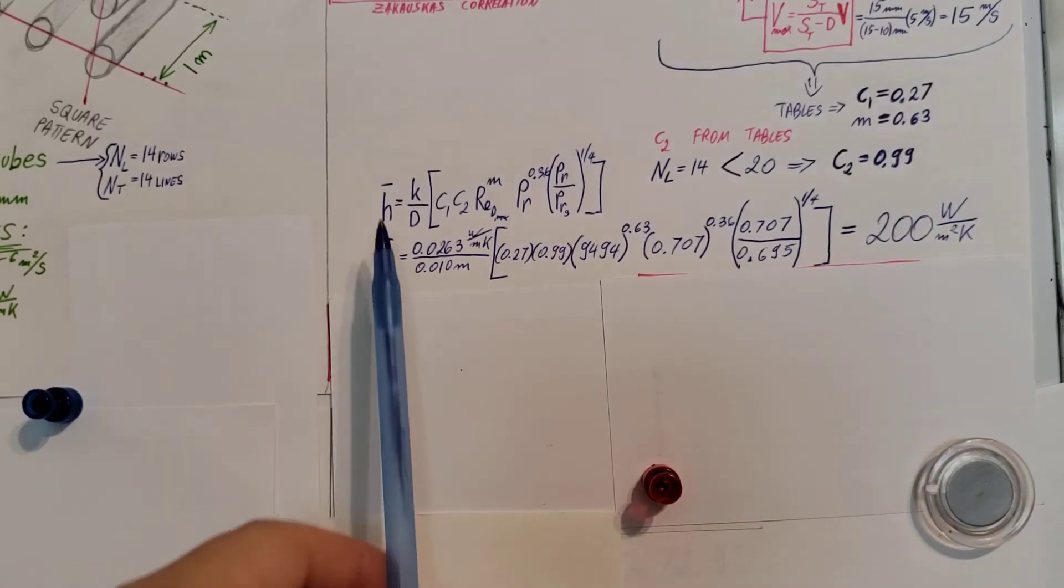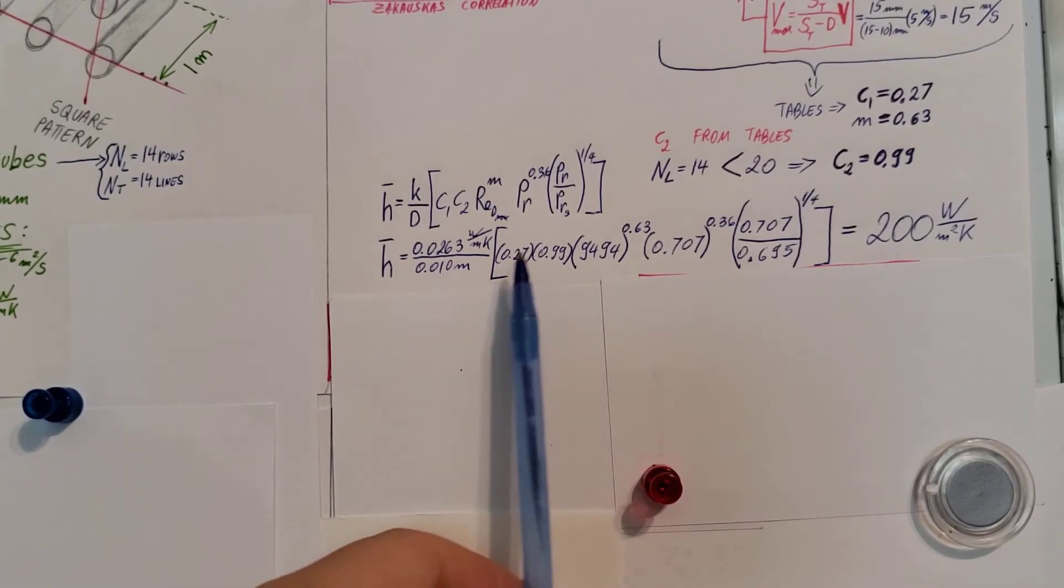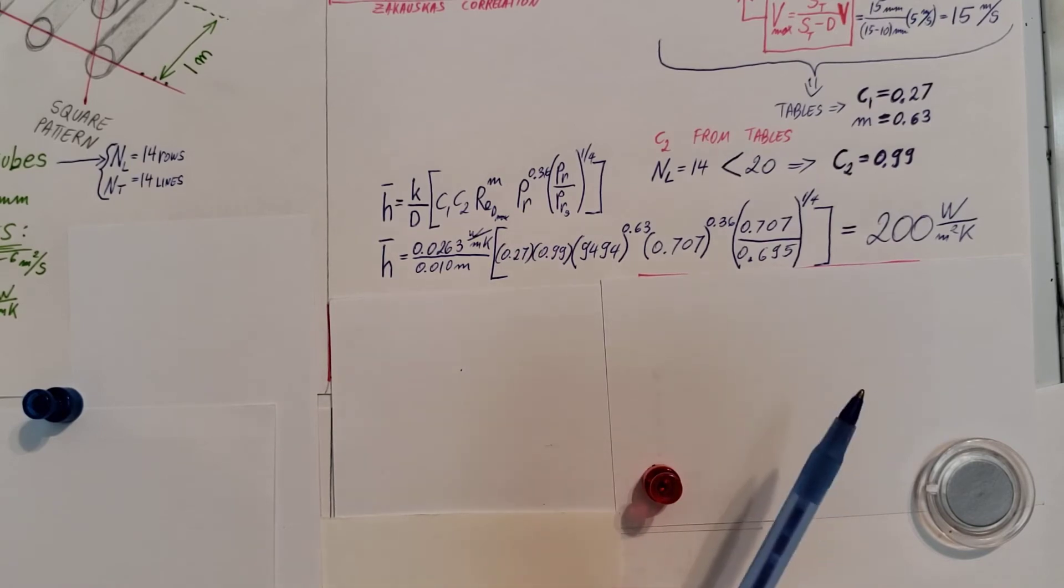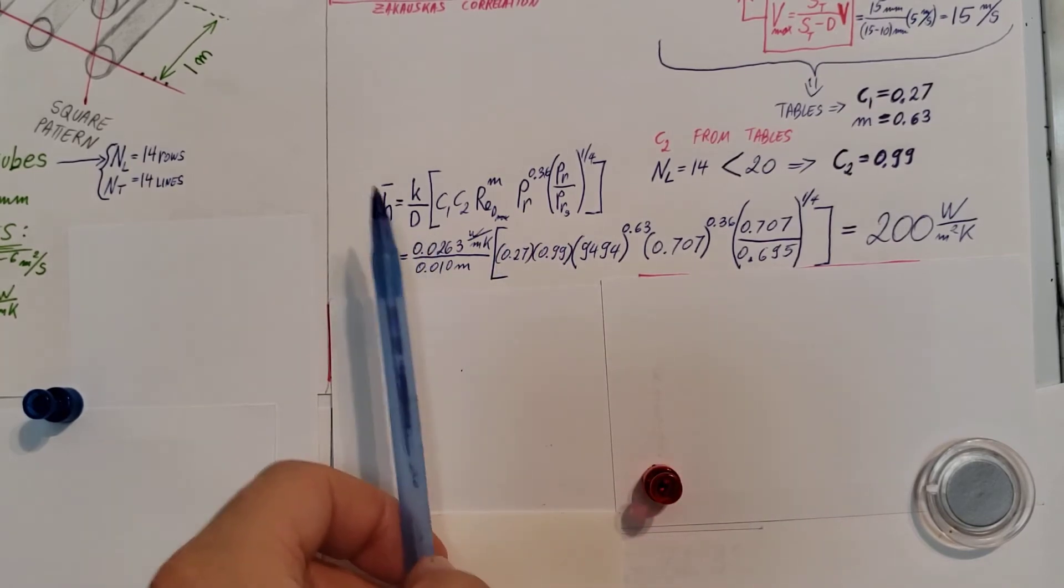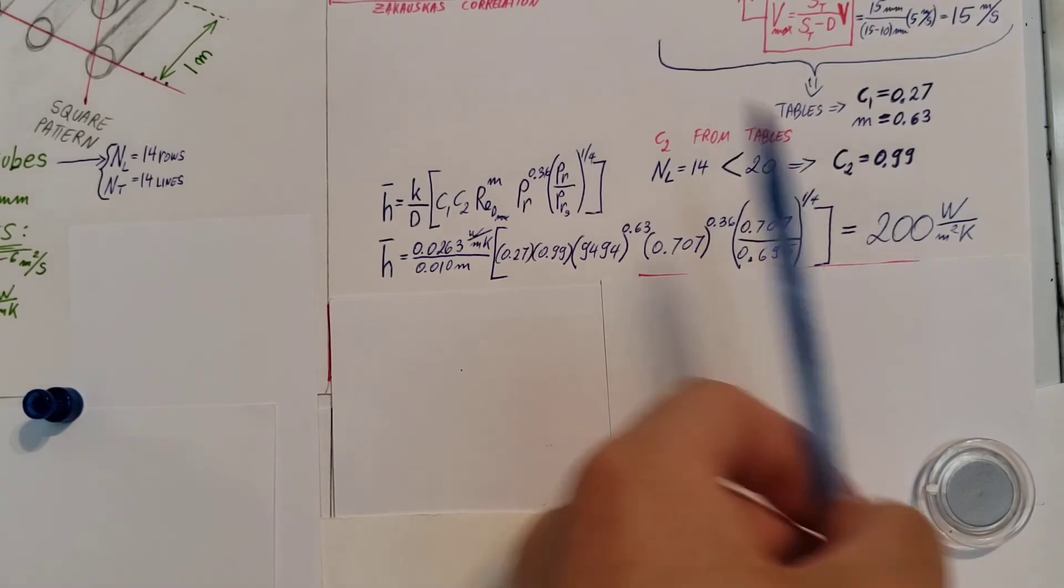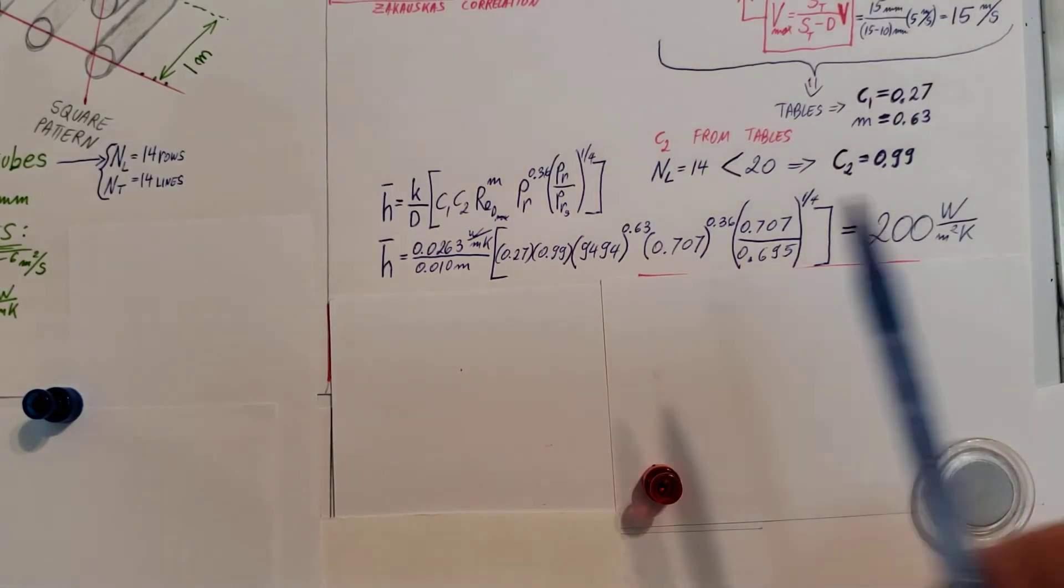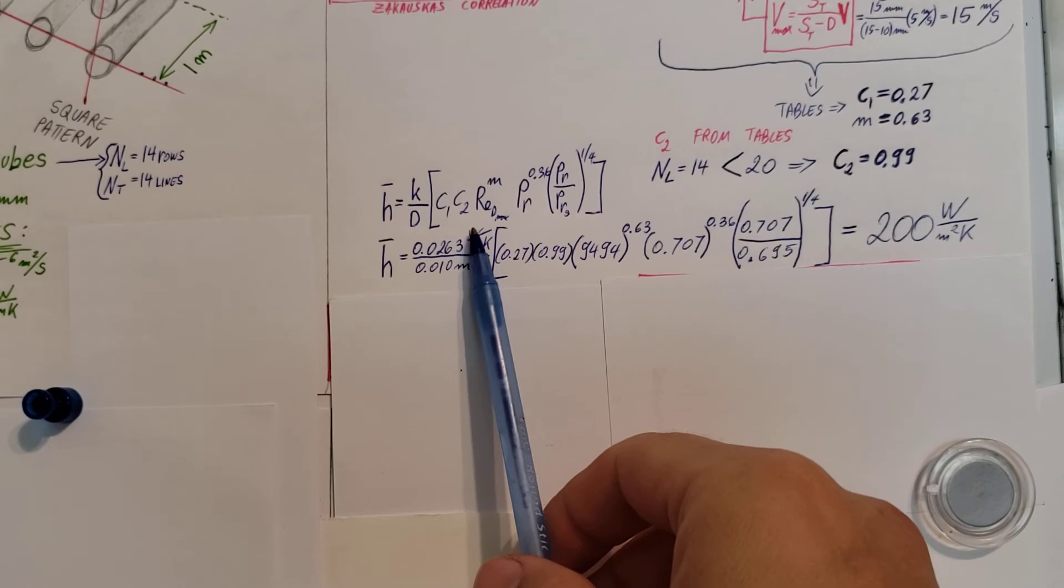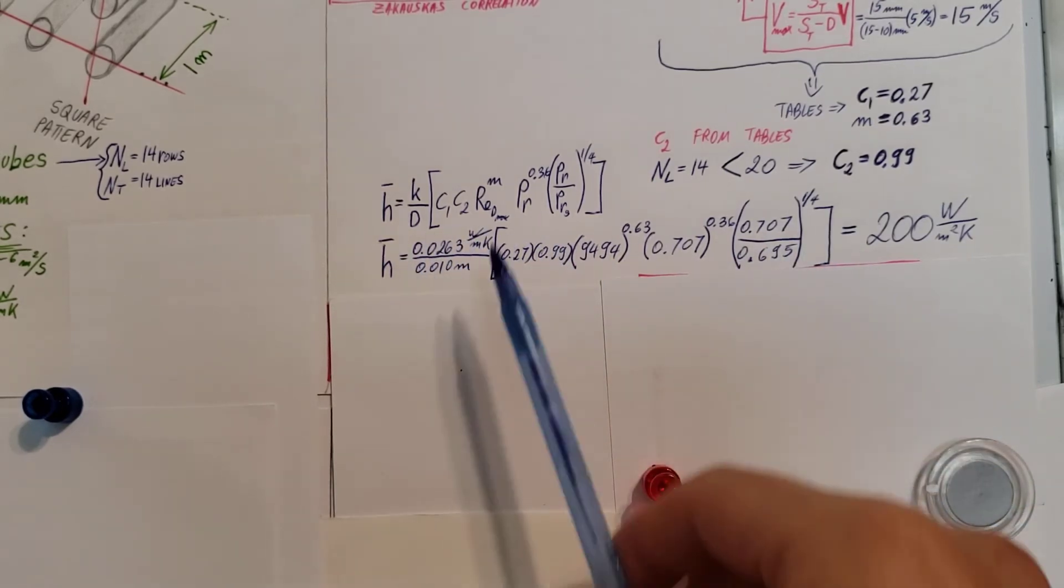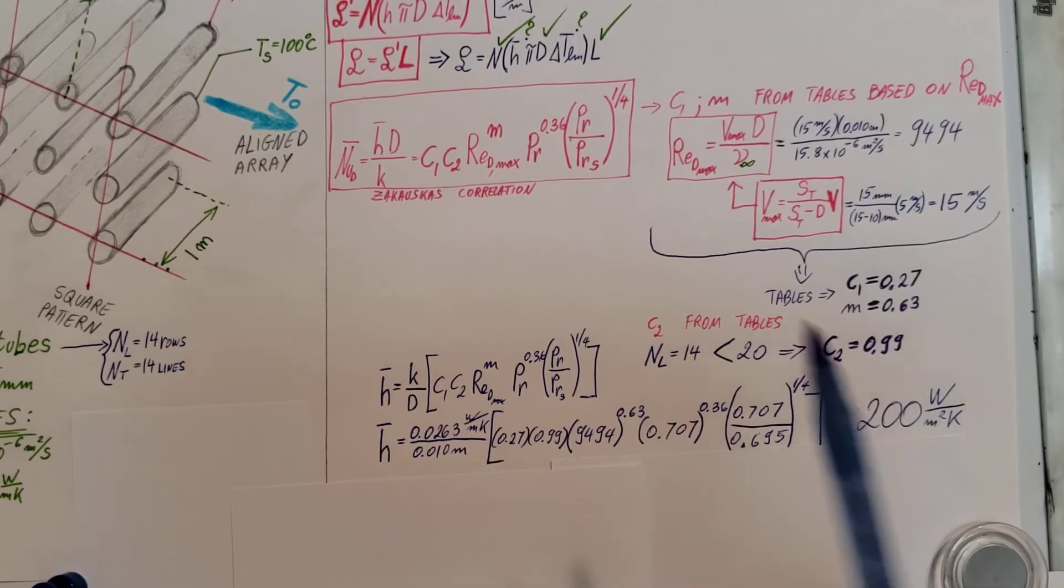There we have it. We're going to look them up in property tables and make sure that you have all the properties at T infinite except Prandtl number that's marked specifically that needs to be found at the surface temperature. That's the only one that's not at infinite. Now we come back to this formula and plug everything in. I kind of ignored most of my units because if I don't, this will be super long. But here we have it - everything plugged in and calculated. We have a H value of 200 watts per meter square Kelvin. All the units are there.